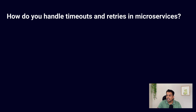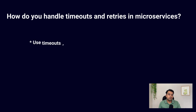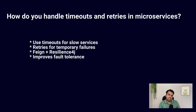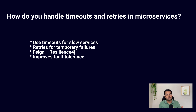The next question is: how do you handle timeouts and retries in microservices? Timeouts and retries play an important part when writing microservices. Timeouts ensure your service doesn't wait forever for a response — in Spring Cloud, we use Feign with timeout settings. Retries help in cases where downstream services fail temporarily. Libraries like Resilience4J and Hystrix handle retries, circuit breakers, and fallbacks. This makes our system more fault tolerant.